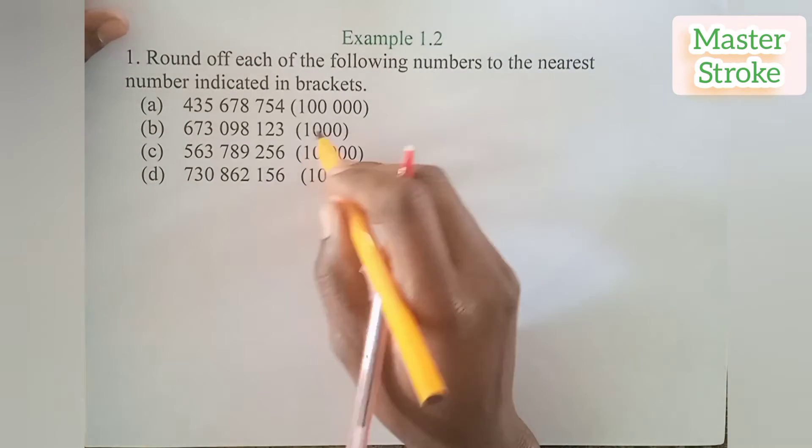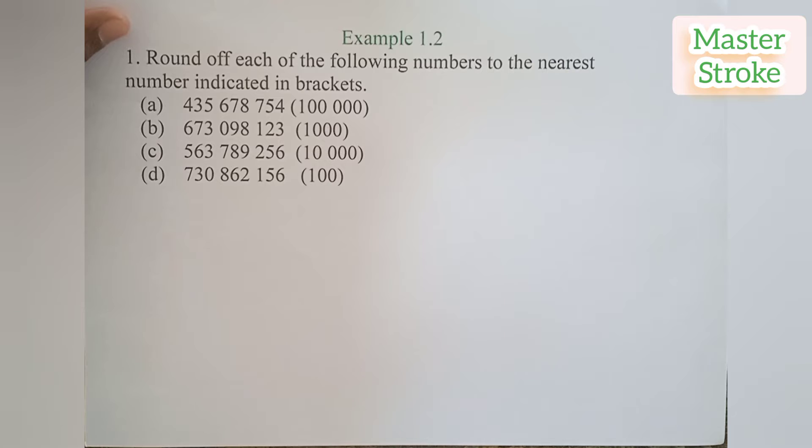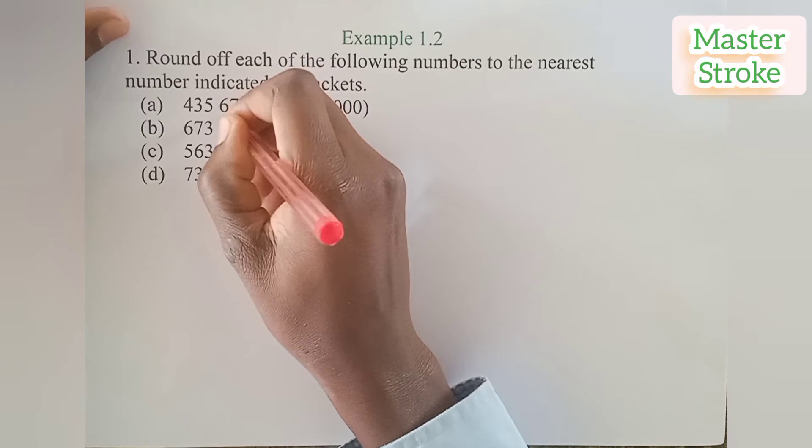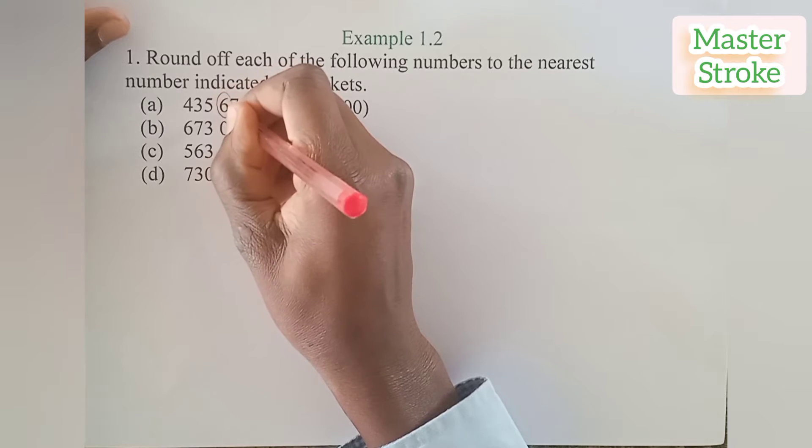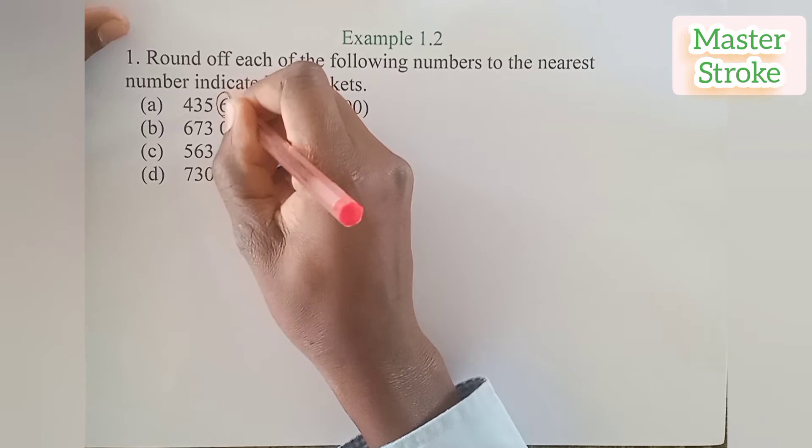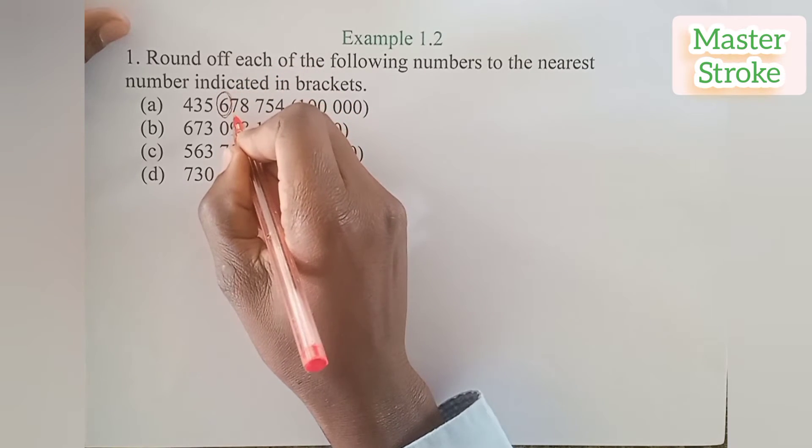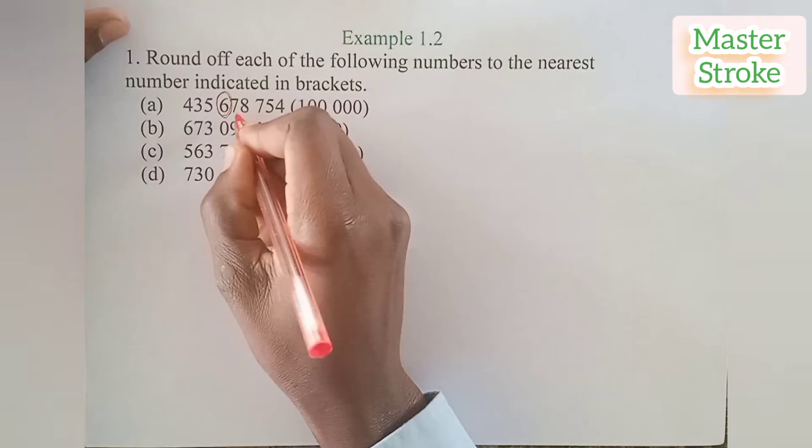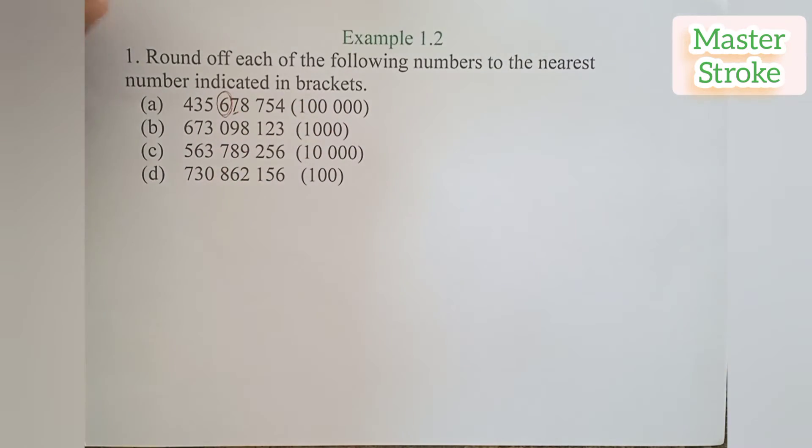For the first number we are rounding off to nearest hundred thousand, so we check the number at hundred thousand position which is six, the one which I have circled. We check for the number to the right which is seven, the one that I have underlined.